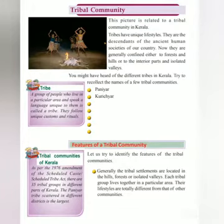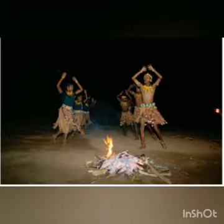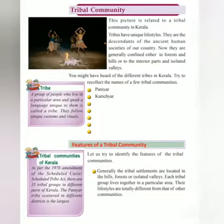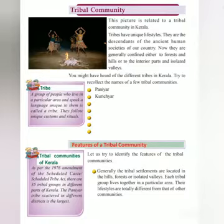The first group of people is tribals, so it is called the tribal community. We can see a picture here. Tribes have unique lifestyles — they are descendants of the ancient human societies of our country. Now they are generally confined either to forests and hills or to the indebted parts and isolated valleys. Let's collect the names of a few tribal communities: Paneer, Kurichiyer, Pulaya, Vannan, etc.